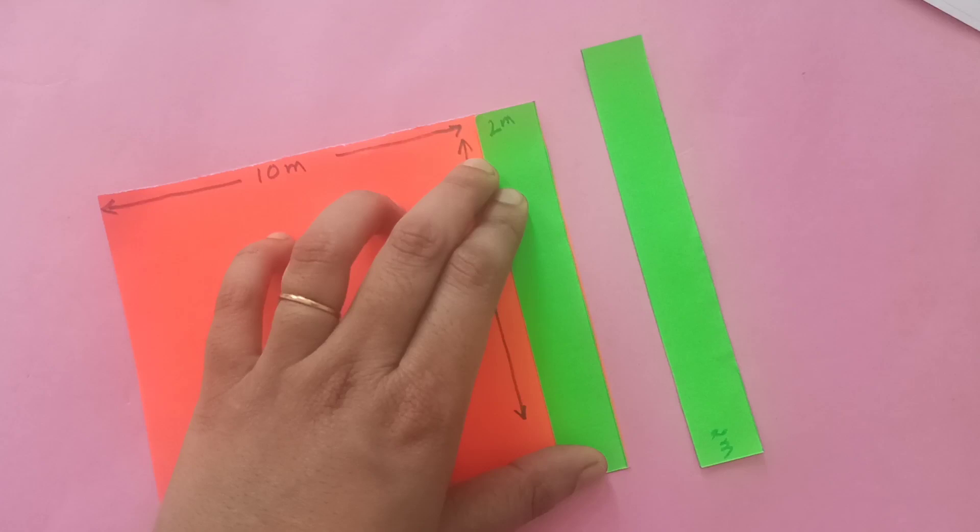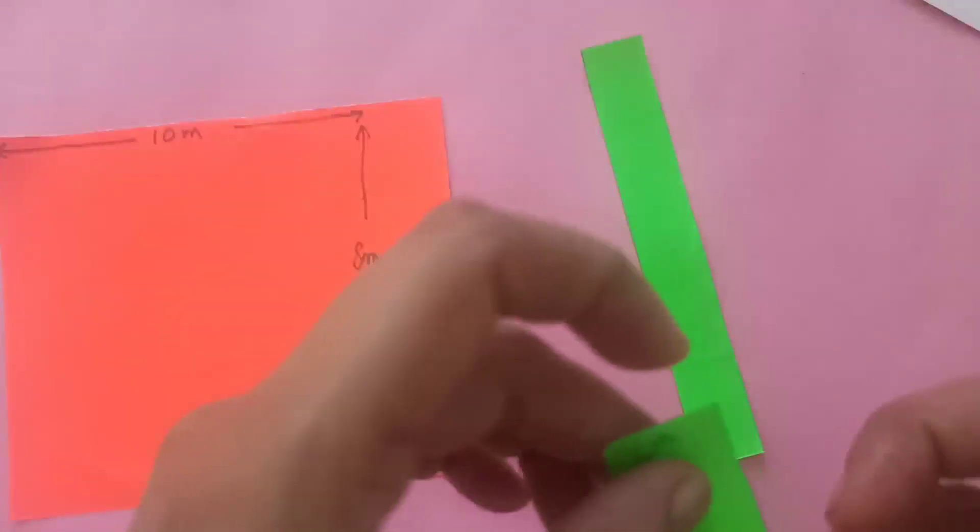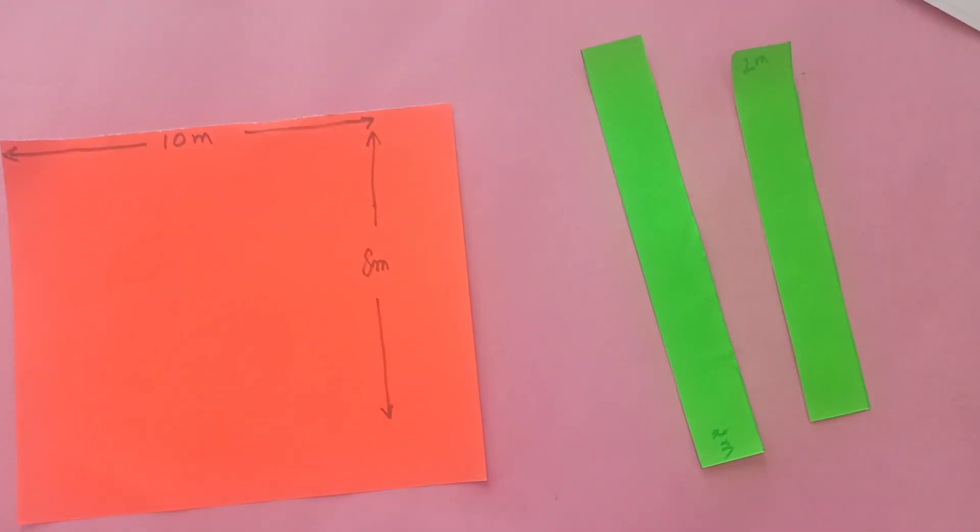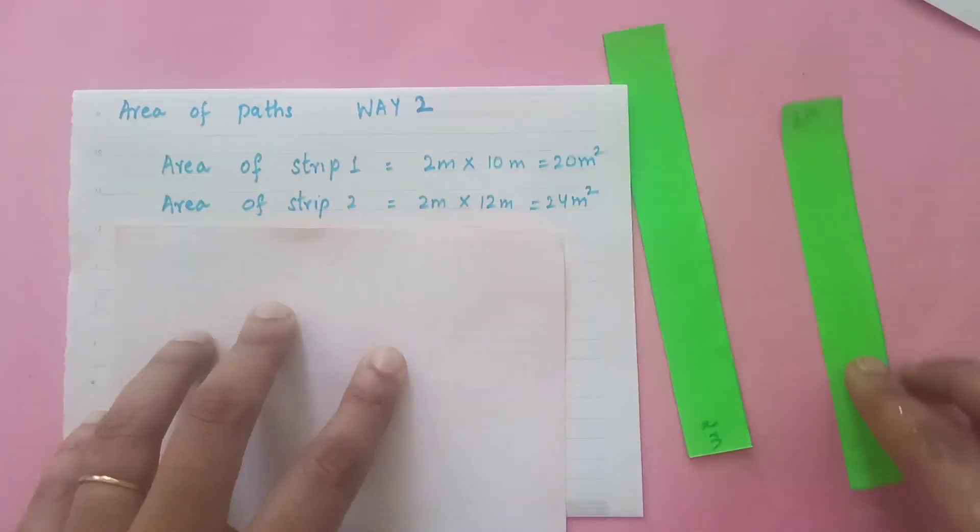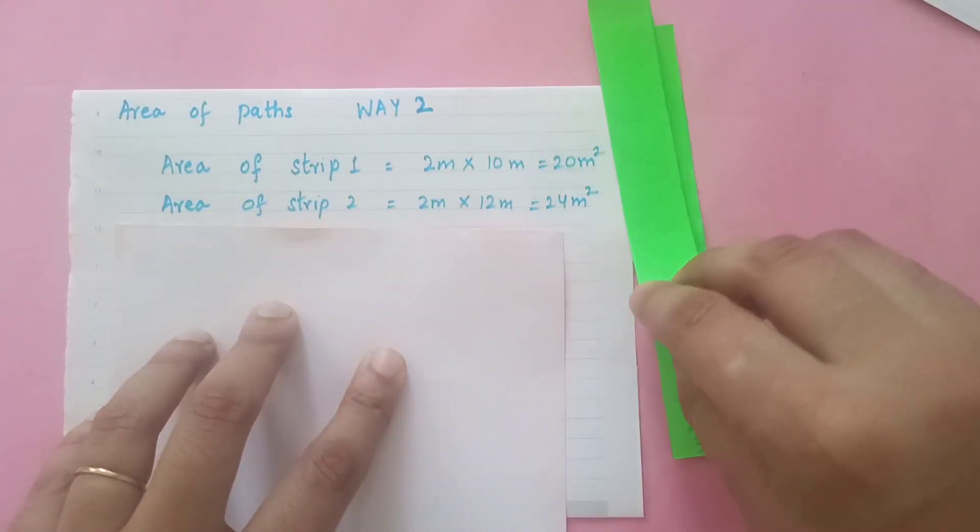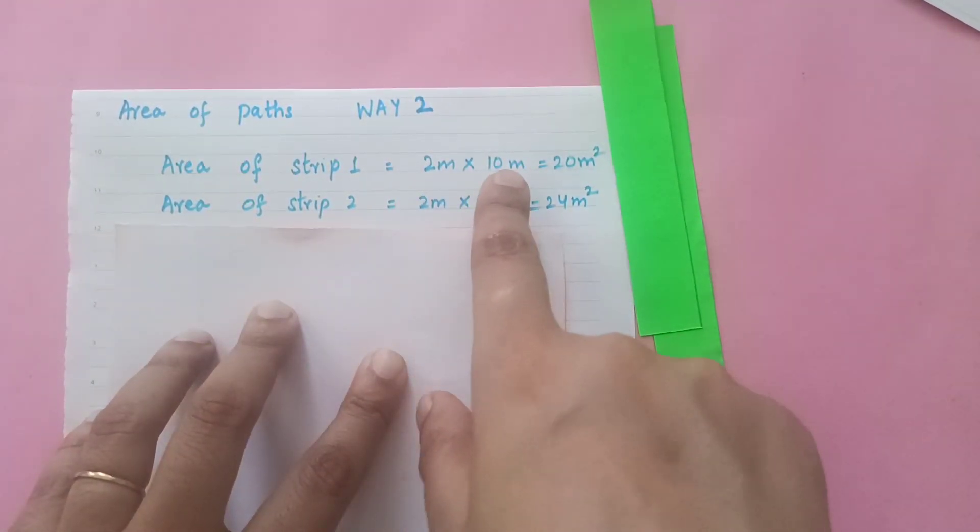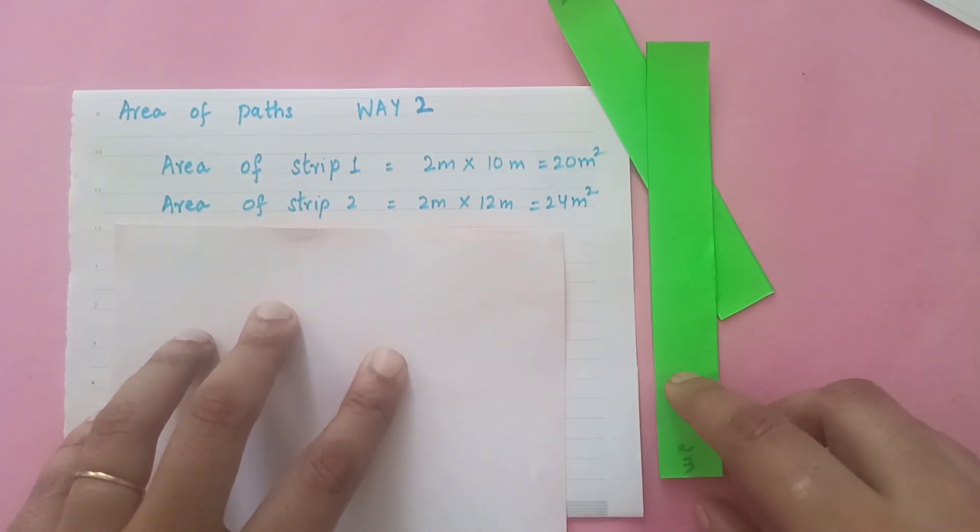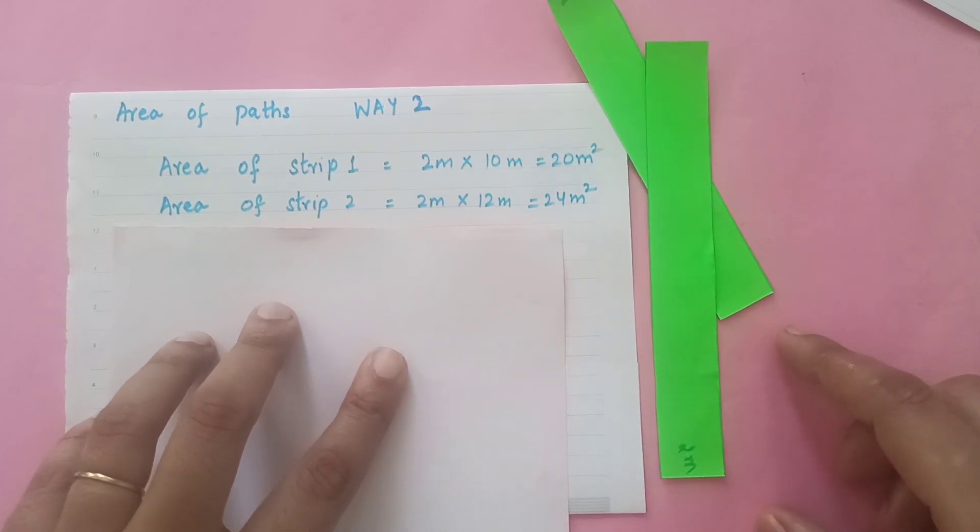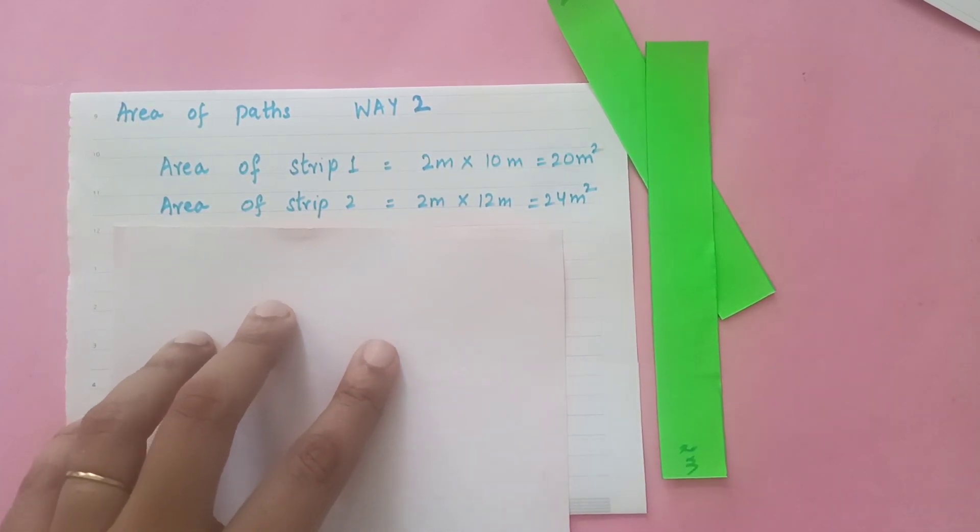So now we can find out the area of both these strips. Let's see what is the area of these strips. The area of strip 1, that is the smaller one I have taken, 2 into 10 meters is 20 meters square. And area of the second strip, 2 into 12 meters, that is 24 meters square. But now there is a catch in it.